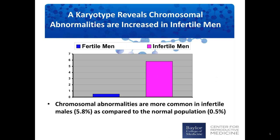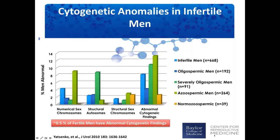However, simply by doing this very simple analysis, we can see that a karyotype reveals chromosomal abnormalities are present in infertile men as compared to fertile men. Unselected infertile men with no other diagnostic criteria have an incidence of about 6% chromosomal abnormalities, which is about tenfold more common than that found in the normal population.